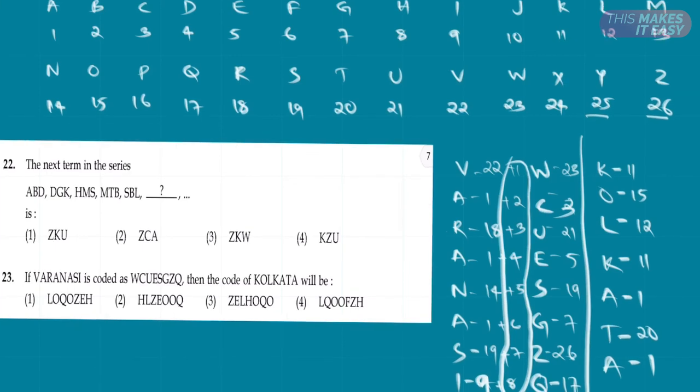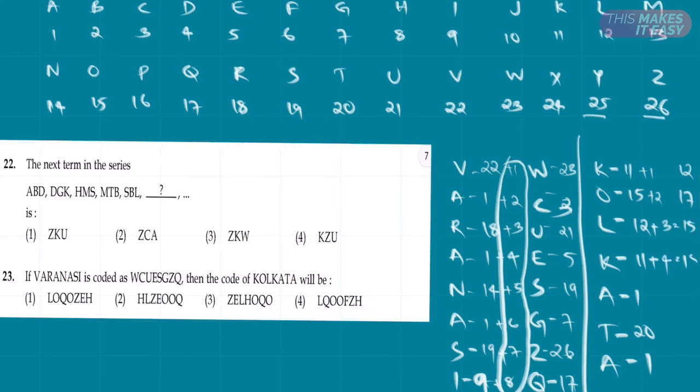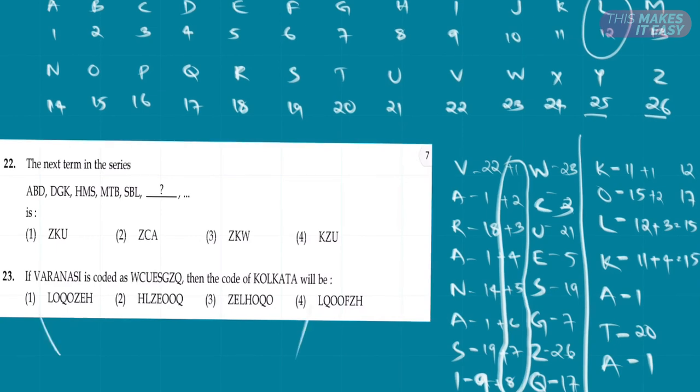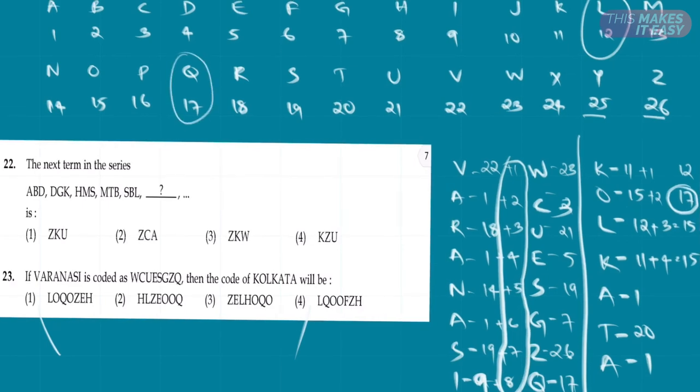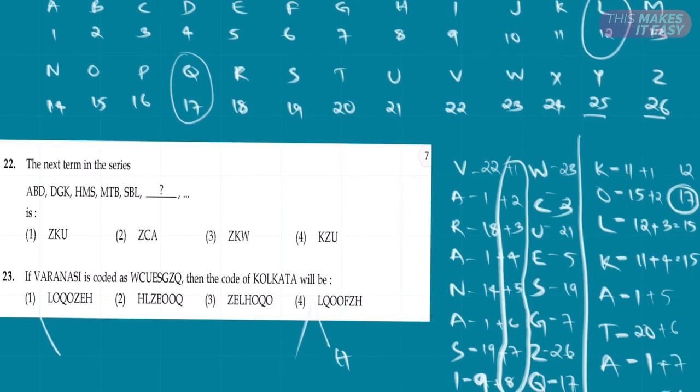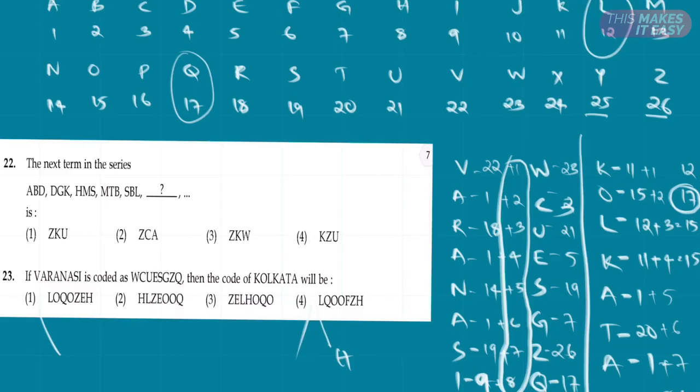So here the 1, 2, 12 plus 3 is 15, 11 plus 4 is 15. So let's check what is 12. 12 is basically L. So there are two options, first and last. Second letter will be 17. What is 17? 17 is basically Q. So only the fourth option is coming correct according to this condition. Let's even look at the answer key. For question 23, the answer is 4. So our answer is correct. So it's very easy.